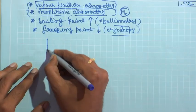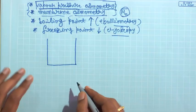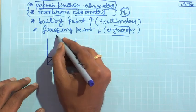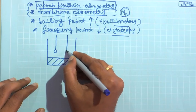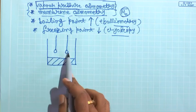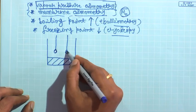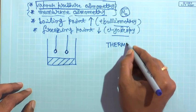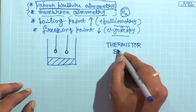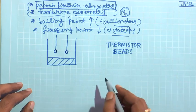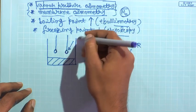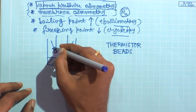Vapour pressure osmometry — the kind of setup that you have looks something like this. You have a chamber in which you have a solvent. You have two thermistor beads that are fixed at a certain position above the solvent. You have a syringe which can put a drop of solvent or solution, and the whole setup is basically temperature controlled — isothermal.